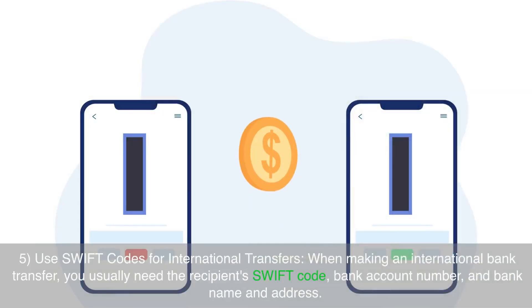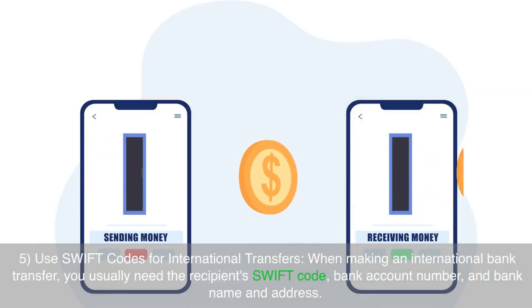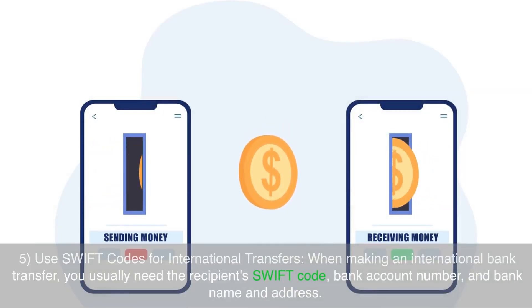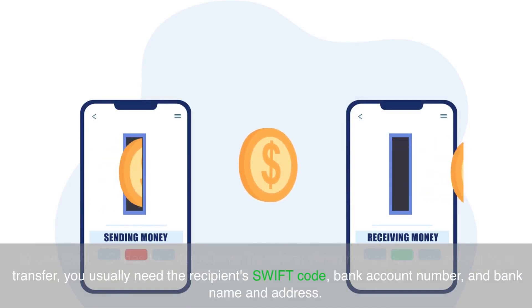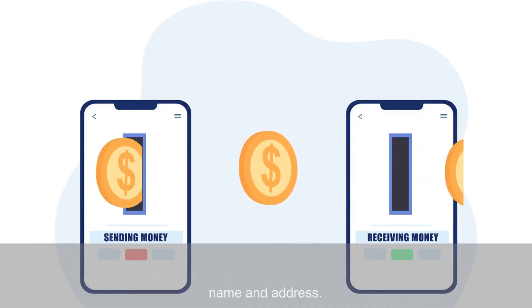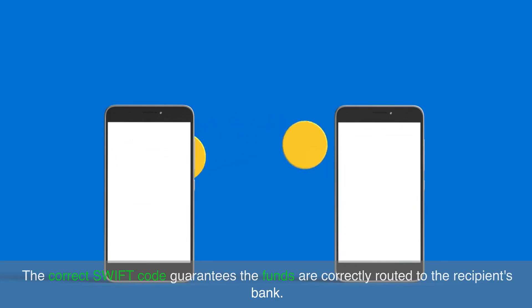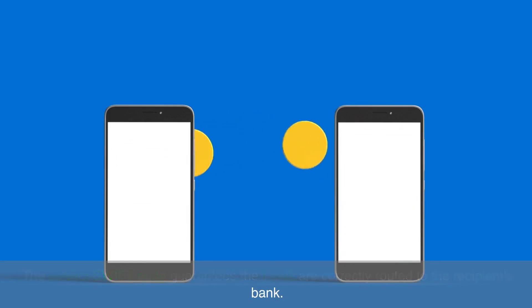When making an international bank transfer, you usually need the recipient's SWIFT code, bank account number, and bank name and address. The correct SWIFT code guarantees the funds are correctly routed to the recipient's bank.